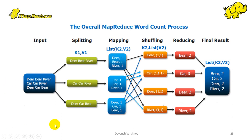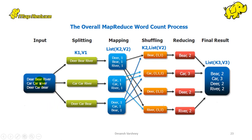Here is an example: we have an input file that contains words like 'deer,' 'car,' 'river,' 'beer.' First we split the data into key-value pairs, splitting by line into three parts. Then we map a key — the frequency of 'deer' is one, 'river' is one in the first part, 'car' is one. After mapping, we shuffle and join them to find the total frequency — for example, the total frequency of 'car' is three across all three parts. We list them into a key-value pair again as the final result. That's how MapReduce works: it takes the input, splits it, maps it, and reduces it.